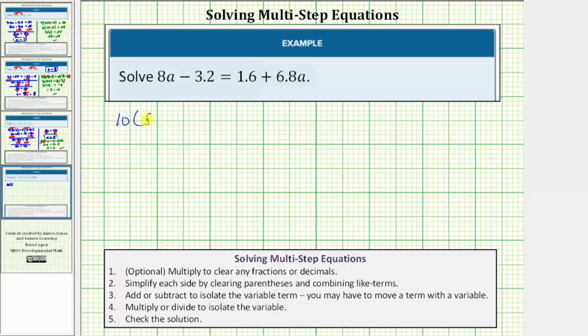So we'll have 10 times the quantity 8a minus 3.2 equals 10 times the quantity 1.6 plus 6.8a. And now we'll distribute here as well as here. So 10 times 8a equals 80a. So we have 80a minus 10 times 3.2 is equal to 32. Remember to multiply by 10, we move the decimal point to the right one place. So 80a minus 32 equals 10 times 1.6 is equal to 16 plus 10 times 6.8a is equal to 68a.